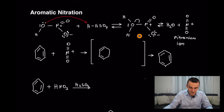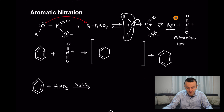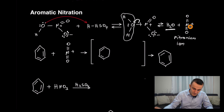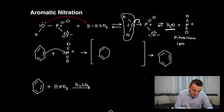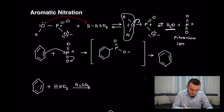Let's move now to aromatic nitration. To nitrate benzene or aromatic rings, you need a mixture of nitric acid with sulfuric acid. Nitric acid in the presence of sulfuric acid takes the H⁺ from the sulfuric acid, and this bond breaks to form a molecule of water. What remains is a nitronium ion (NO₂⁺) that serves as the electrophile to make nitration of the aromatic ring possible.